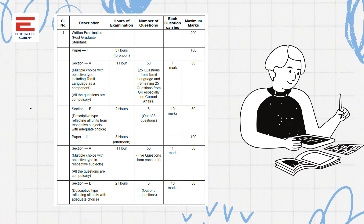Let me analyze the time we have to allot. For both Paper One and Paper Two, we have two hours each in Section B. We have to write five questions. In both papers, it is descriptive type reflecting all units. On the whole, for both papers, the written part is almost the same — five questions — and we have two hours, meaning 120 minutes for one particular section.